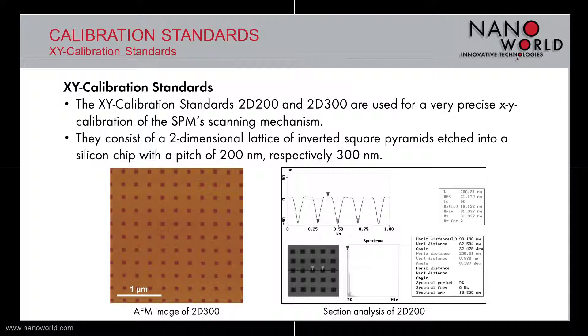On bottom right you can observe a section analysis of an AFM image of the calibration standard 2D200. The distance between two consecutive minimums is 200.31 nm, which is very close to the 200 nm expected.